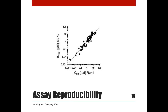The IonWorks Barracuda assay was highly reproducible, as illustrated by test-retest of 70 compounds. IC50 values were obtained at partially inactivating voltage, and the correlation coefficient was 0.96.